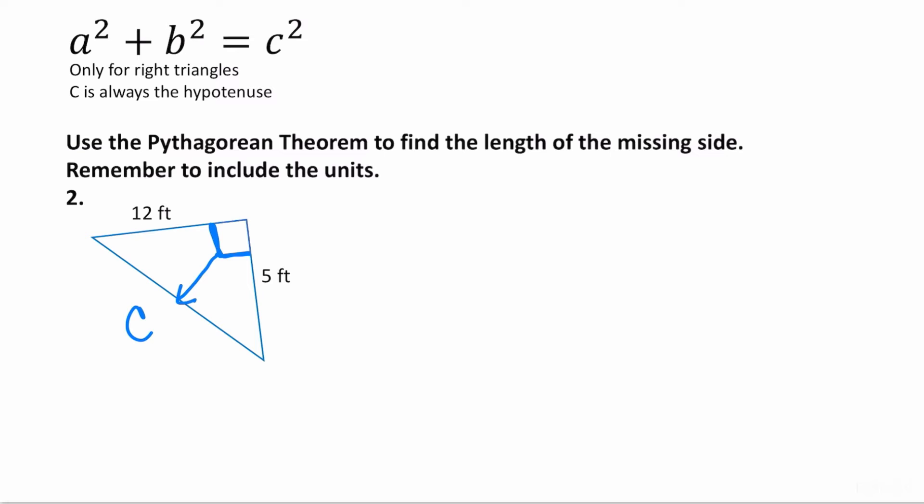Again, it doesn't matter if I make the 12 A or the 5 A because either way you are going to add those squares together. So I am just going to go A and B. So I get 12 squared plus 5 squared is equal to C squared. 12 squared is 144. 5 squared is 25 because 5 squared means 5 times 5 equals C squared.